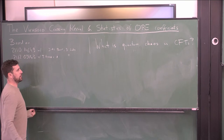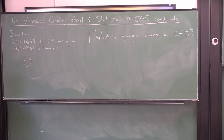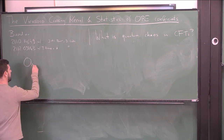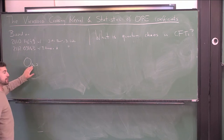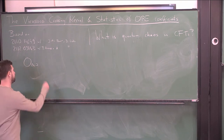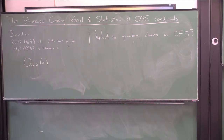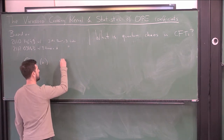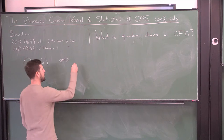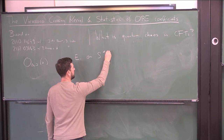In conformal field theories, the nice operators that we think about are local operators. We use representation theory of the conformal group, so we label these operators by their scaling dimension and their spin. These are local operators, and the nice observables that we like to compute are correlation functions of these local operators. Through the state-operator correspondence, these are the same as energy eigenstates on a (d-1)-dimensional sphere, for CFTs in d dimensions.